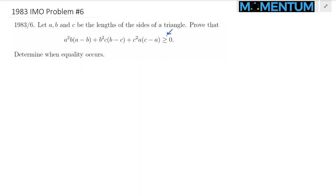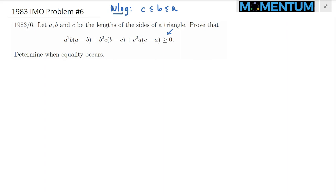Without loss of generality, like we did in an earlier problem — I believe in IMO 1978, 1975, and even 1964 — let's say C ≤ B ≤ A without loss of generality. We can usually say that if the expression is symmetric, and it seems symmetric here.